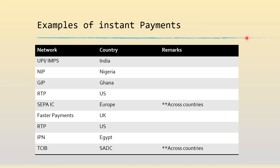We also have cross-country networks, like SEPA Instant Credit across all countries of the European Union, and the TCIB — Transaction Created on Immediate Basis — of the Southern African Development Corporation (SADC), covering the southern African nations. In the next session, we are going to do a deep dive into the SEPA Instant Credit, which is probably the most popular and one which uses ISO 20022 as the messaging layer.